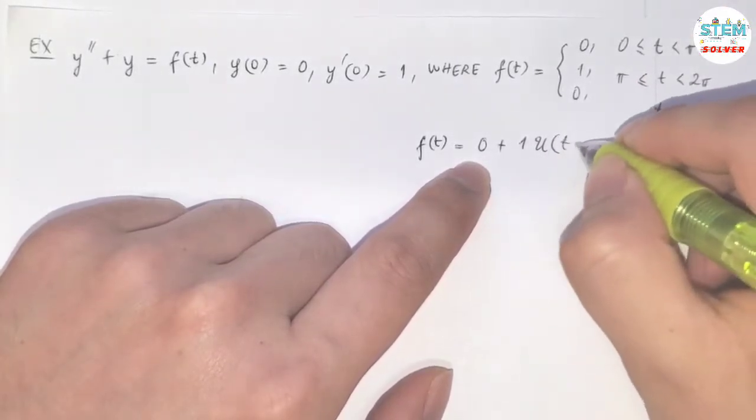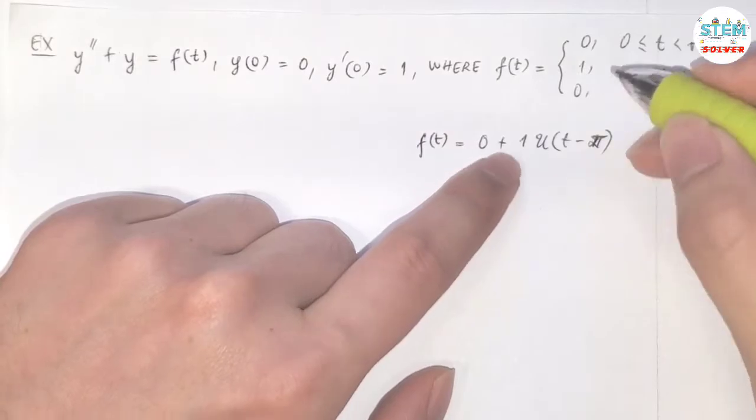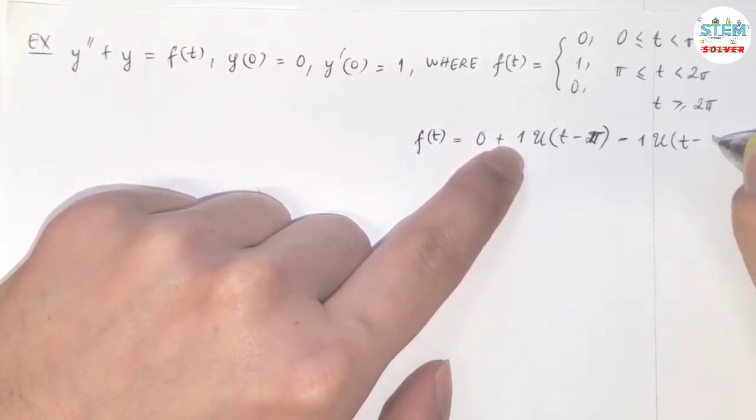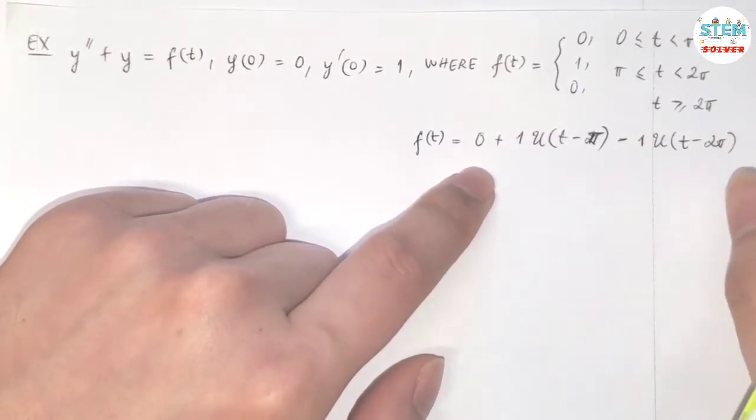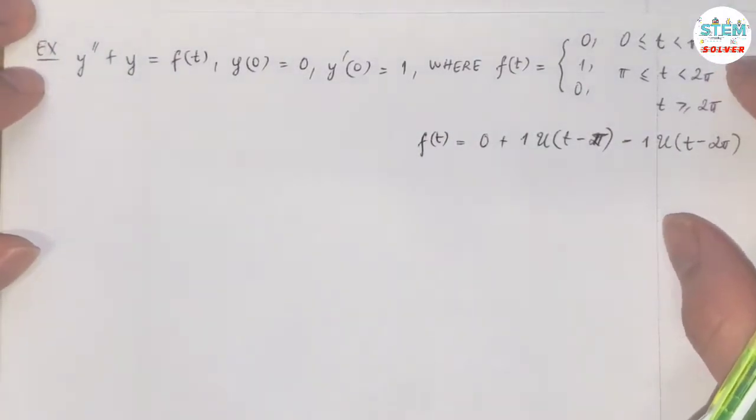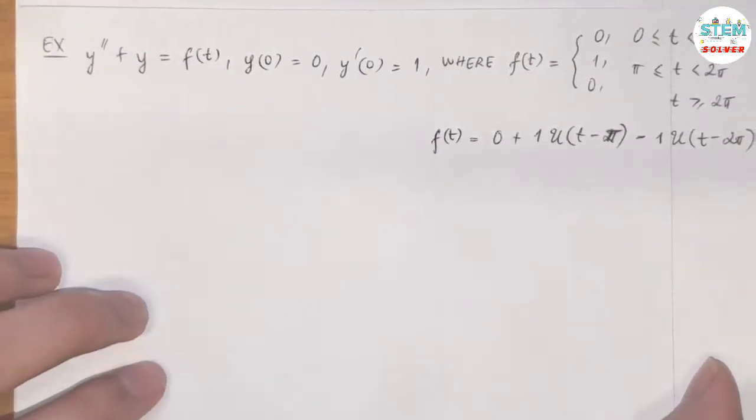Then the next function is 0, so we need to subtract 1 to get 0 and u(t - 2π). But during this point, I believe you know I have to rewrite it in terms of unit step function, so I'm not gonna go over it because this is the initial value problem, it takes a lot of time, I'm not going over the unnecessary things.